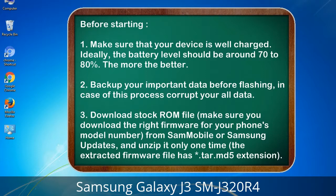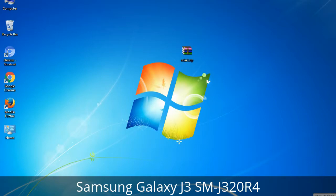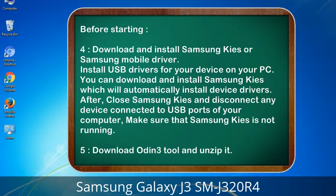Make sure you download the right firmware for your phone's model number from Sammobile or Samsung Updates, and unzip it only one time. The extracted firmware file has a *.tar.md5 extension. 4. Download and install Samsung KIES or Samsung mobile driver to install USB drivers for your device on your PC. Samsung KIES will automatically install device drivers. After that, close Samsung KIES and disconnect any device connected to USB ports. Make sure Samsung KIES is not running. 5. Download Odin 3 tool and unzip it.